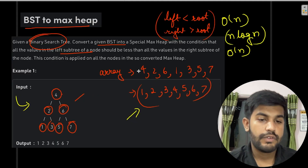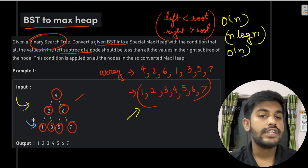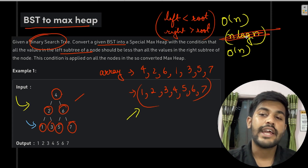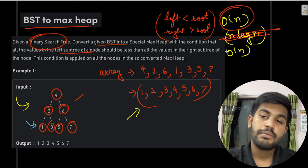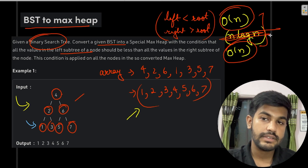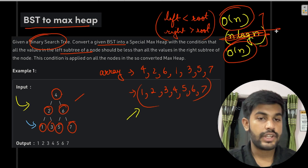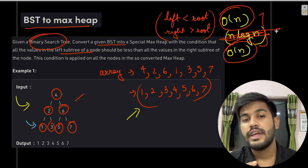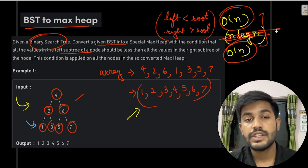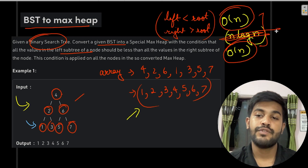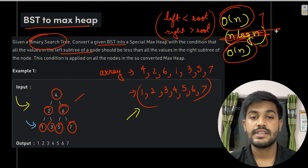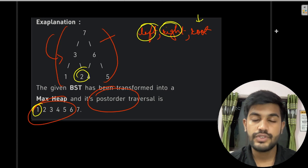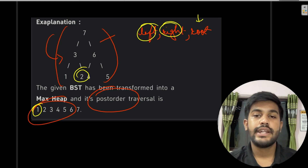Since in-order traversal already gives us sorted values, we can skip the sorting step entirely. We directly store the values visited during in-order traversal into a vector, reducing time complexity to O(n) while space complexity remains O(n). We then modify node values in post-order fashion to produce the desired result.